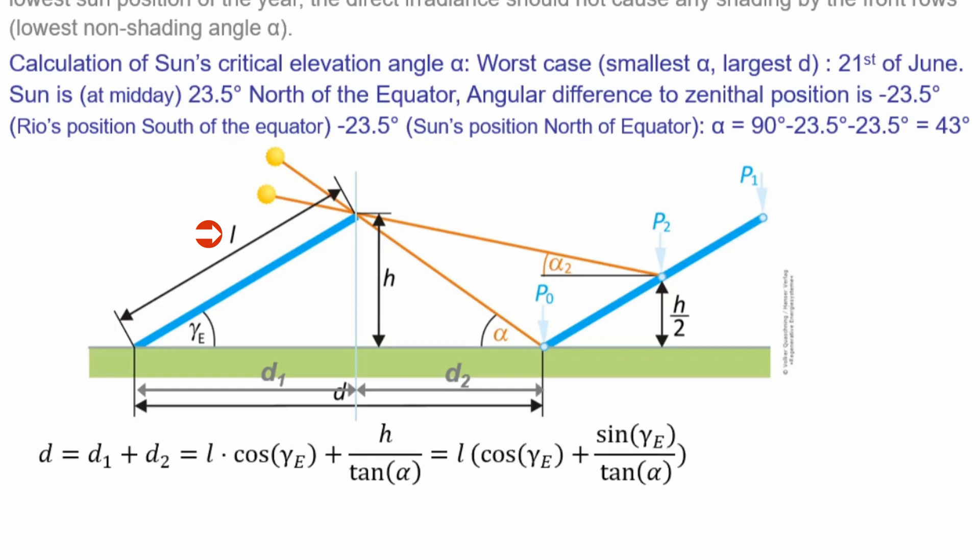This is our length of the module or width of the module. This we have also decided later whether we mount it vertically or horizontally. The elevation angle of the module or the receiver, which is 23.5 degrees, and then the height and the tangents of this angle alpha of 43 degrees.